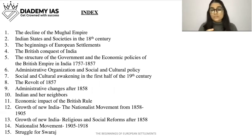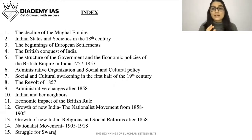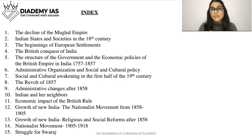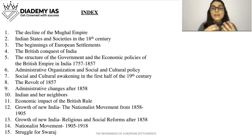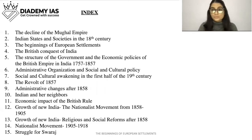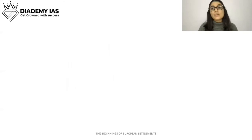We learned how the Portuguese declined in India. The main battle was the Battle of Swally Hole in 1612, in which the English defeated the Portuguese and Surat was taken away from the Portuguese. Portuguese relations with the Mughals also deteriorated. We discussed the significance of Portuguese rule. Now in this chapter we will cover the second European power — the Dutch.